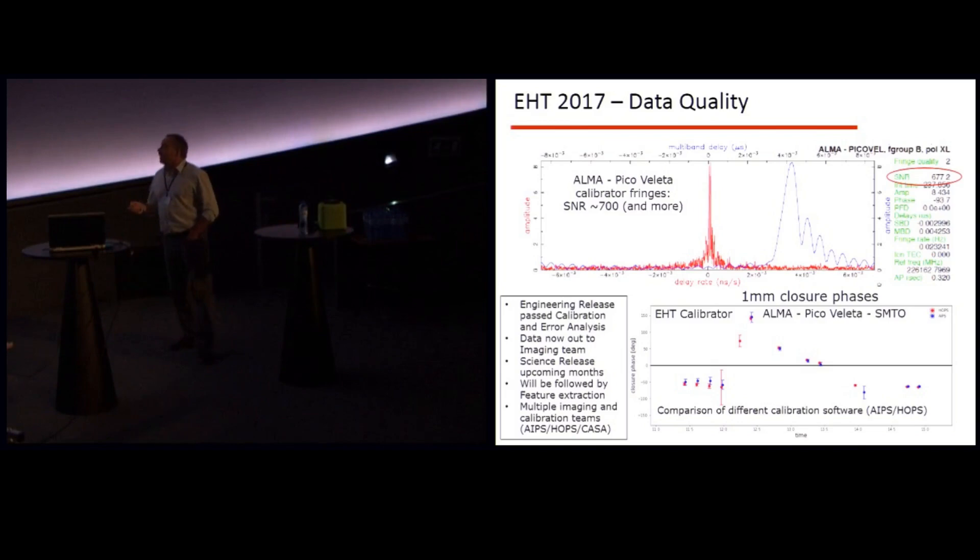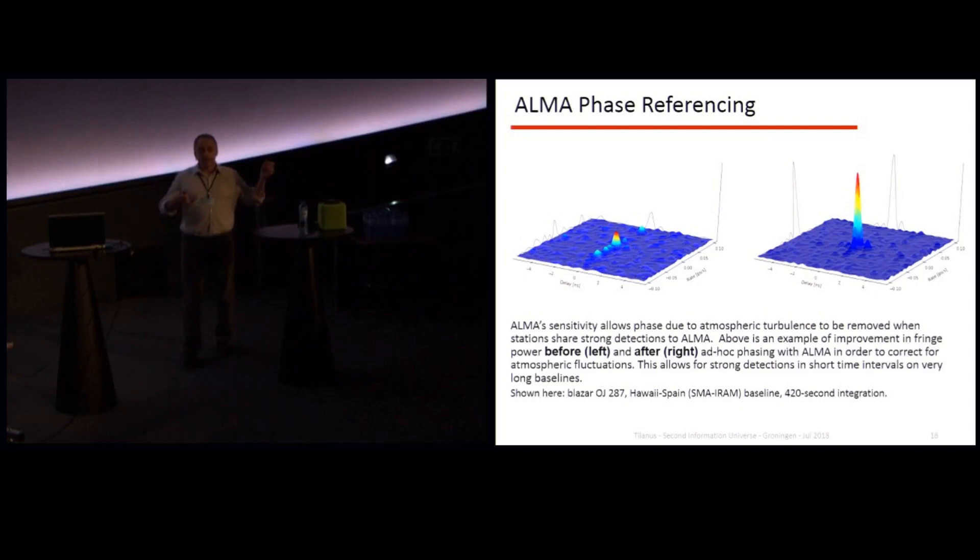And ALMA, what ALMA does for us is shown here. This is actually between two telescopes, one in Hawaii and one in Spain. And you see very poor coherence. But both these telescopes, they work with this very sensitive telescope in Chile. And when you actually calibrate, allow that to calibrate the telescopes, you can see suddenly this very nice coherence peak. So we get like a connectivity around the whole array. And this is what hopefully will get us to the point that we can get an image.